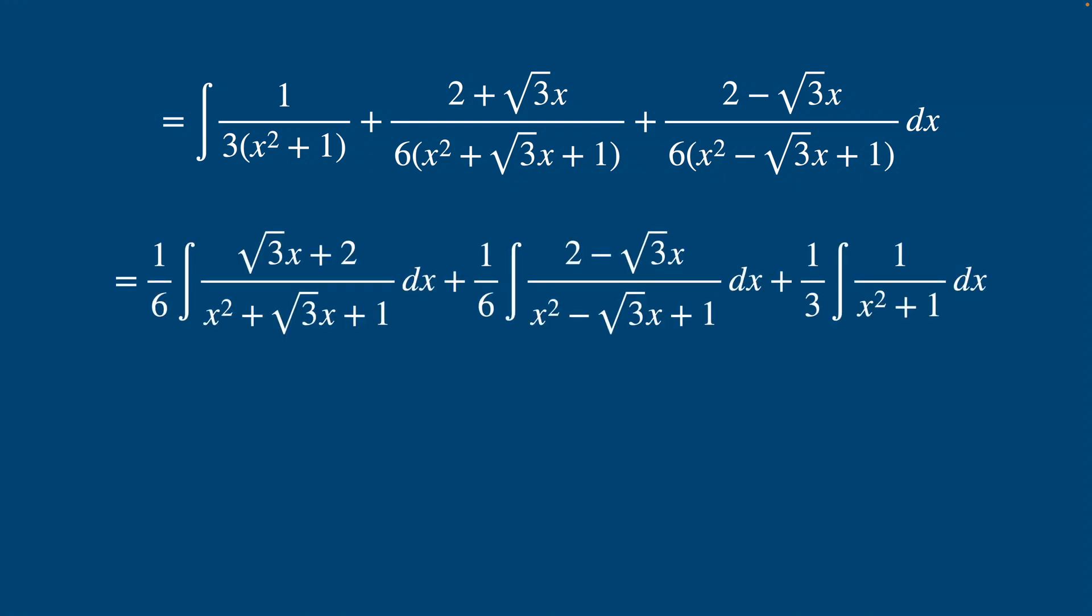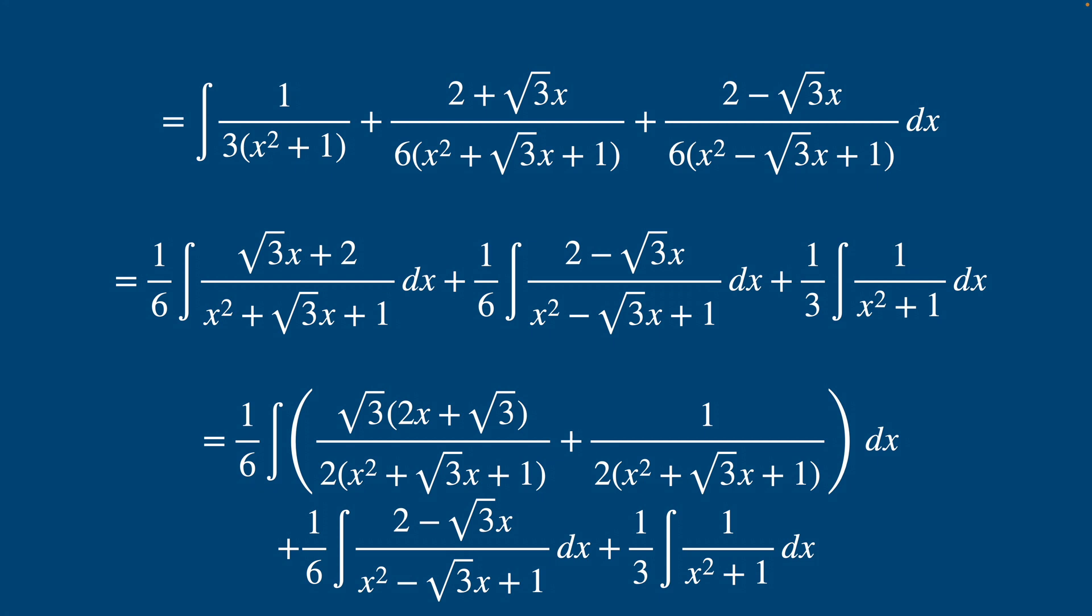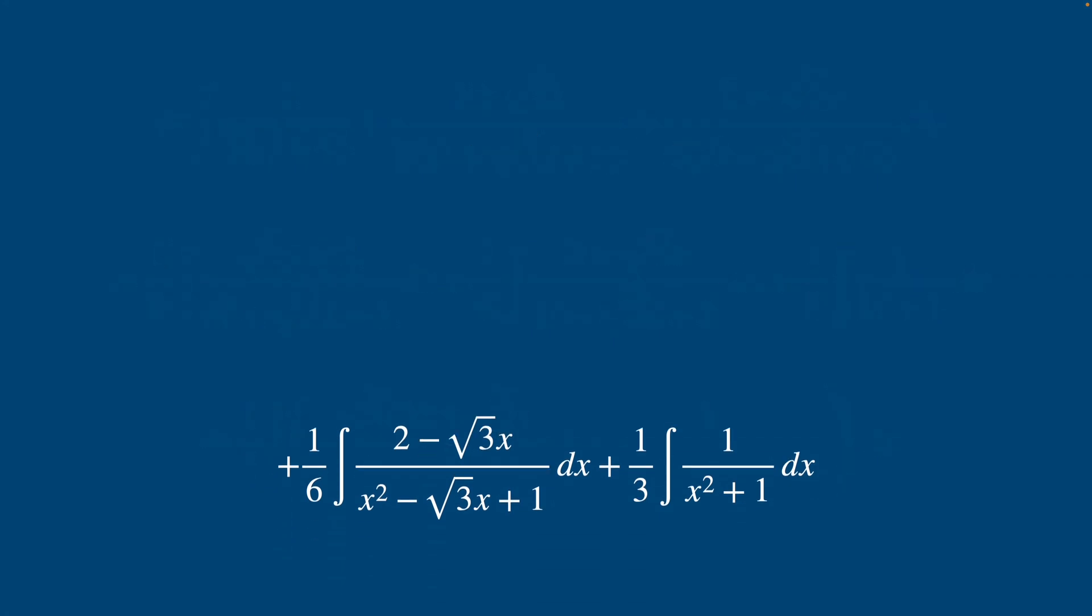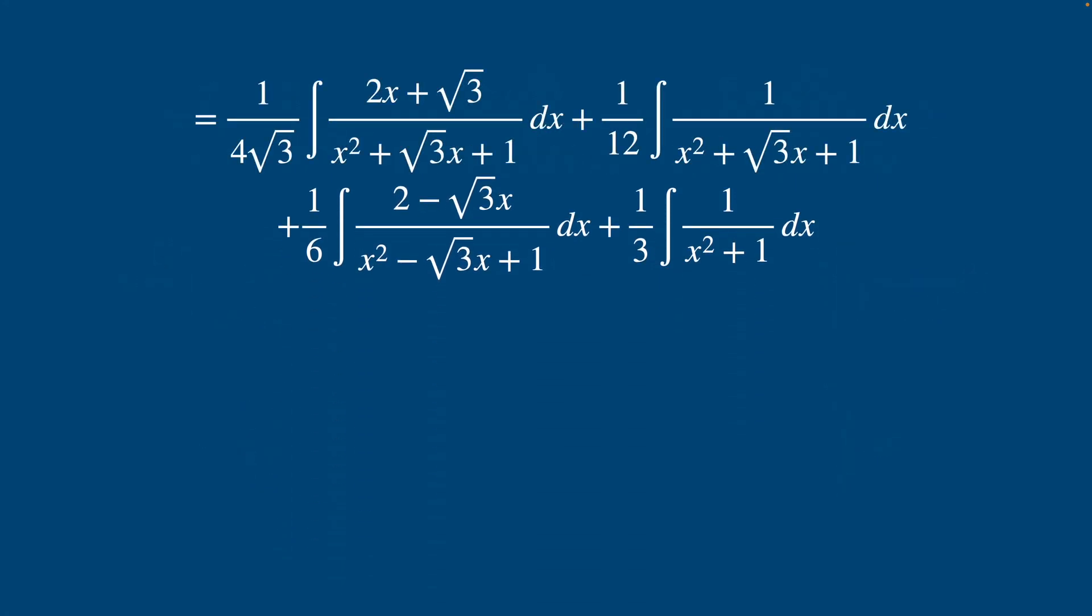Then we can rewrite our leftmost term like so. And then integrating again the sum term by term and factoring out constants, we get this on top here. And so now the real work starts.